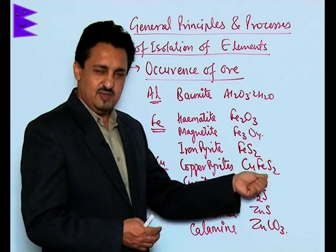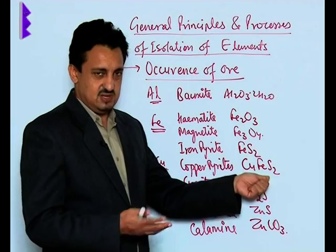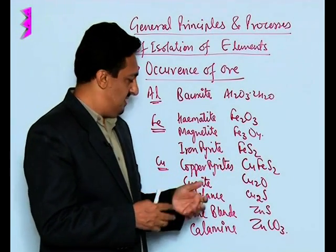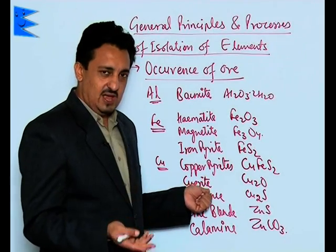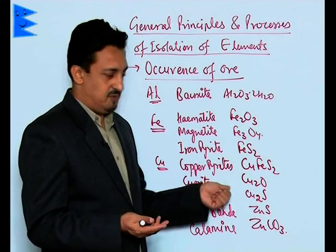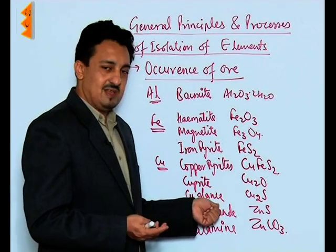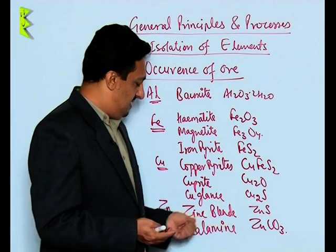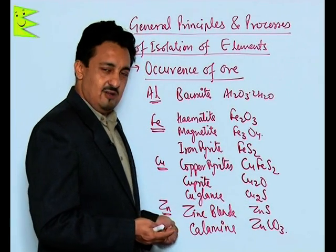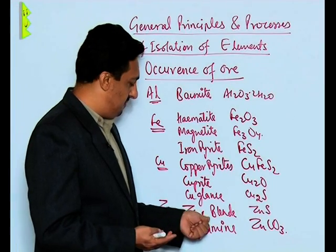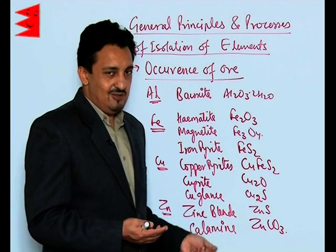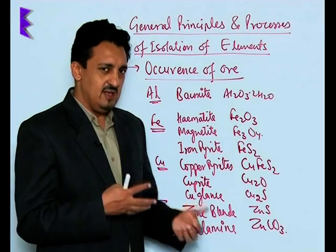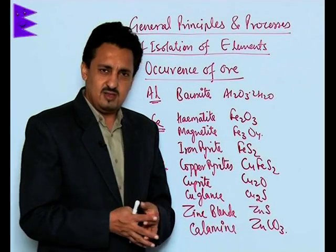Copper is another common metal. Copper pyrite (CuFeS₂) is its sulphide ore containing iron sulphide. Cuprite (Cu₂O) is its oxide ore, and copper glance (Cu₂S) is another sulphide ore. Zinc has a sulphide ore called zinc blende (ZnS) and a carbonate ore called calamine (ZnCO₃).